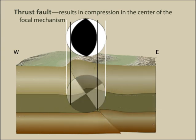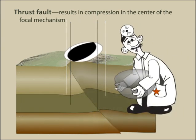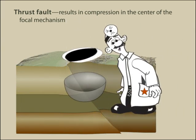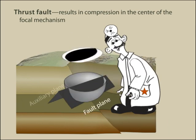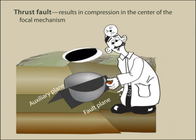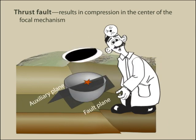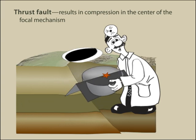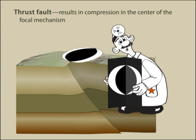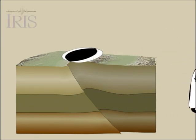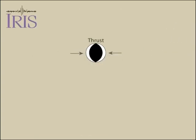The resulting focal mechanism has perpendicular nodal planes with the same orange slice appearance observed for a normal fault. However, for a thrust fault earthquake, dilatations are on the outside and compressions are in the center. This cat's eye focal mechanism is the signature of an earthquake on a thrust fault produced by compressional tectonic forces.